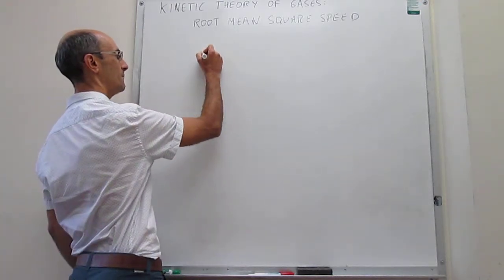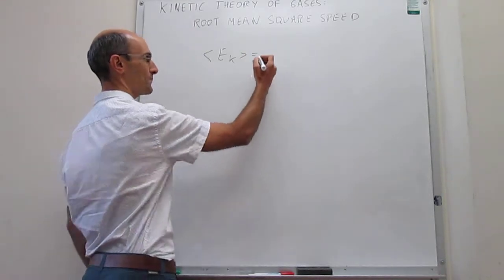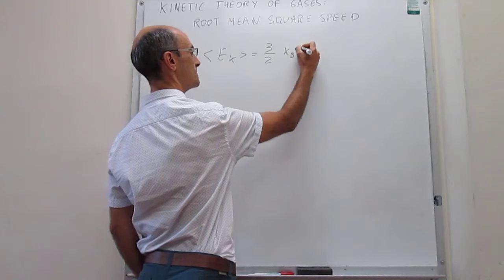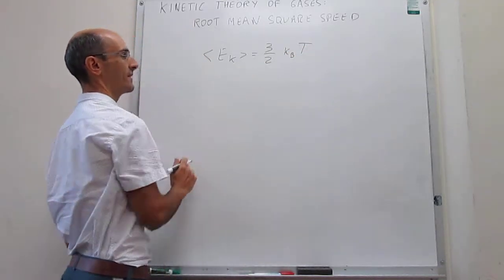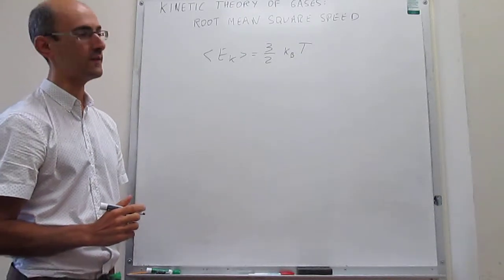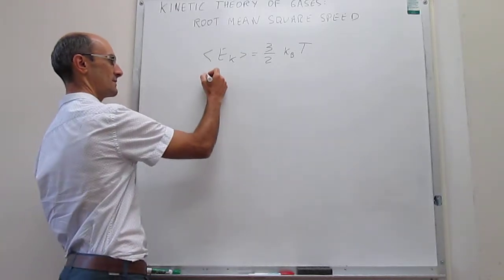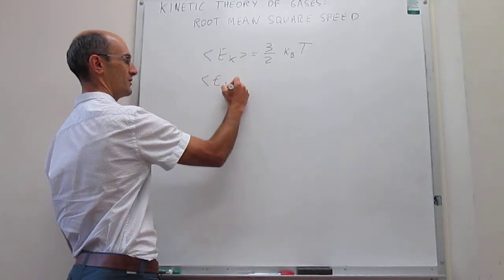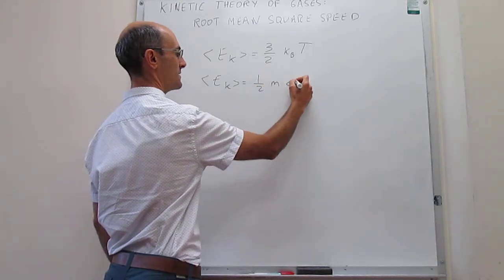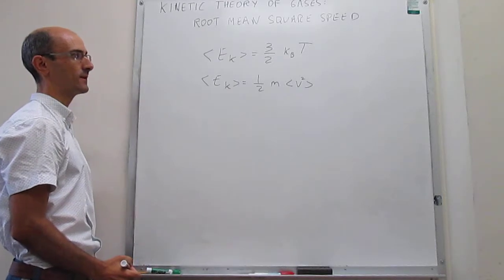If we pay attention to the kinetic energy expression that we derived before, we have seen that this expression tells you that the kinetic energy only depends on the temperature and not on the nature of the gas particle that you're interested in. At the same time we know from general physics, this should be equal to one-half mass times the average of the velocity squared.